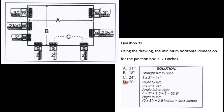Part 2: Using the drawing, the minimum vertical dimension for the junction box is 16 inches.